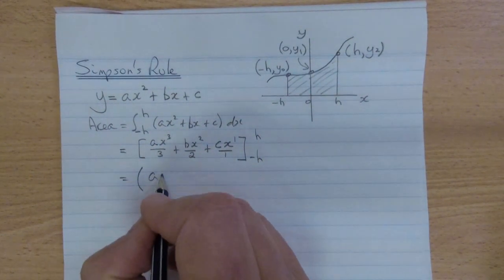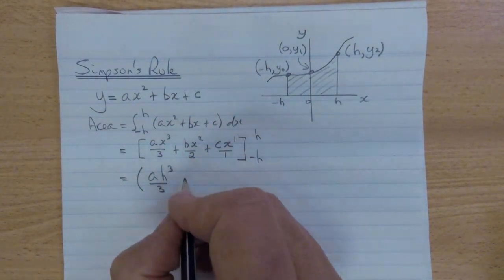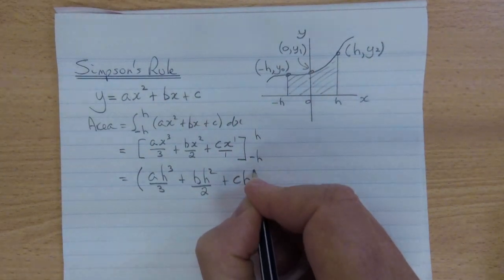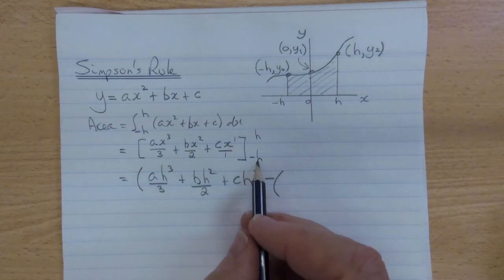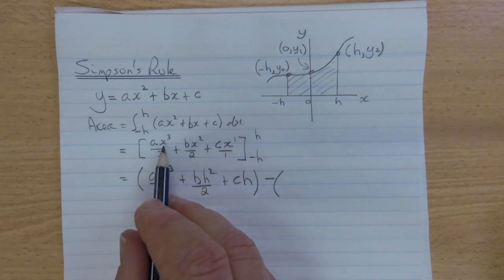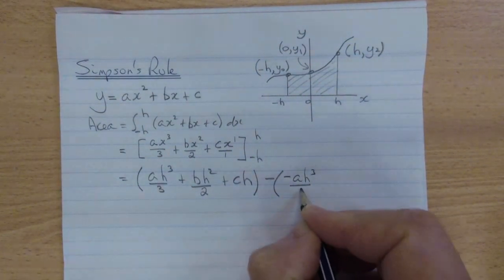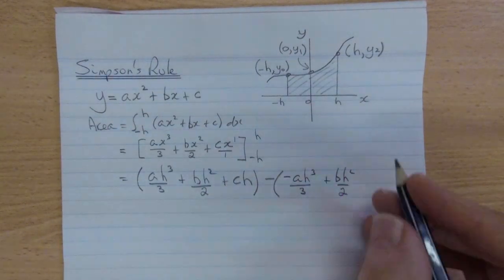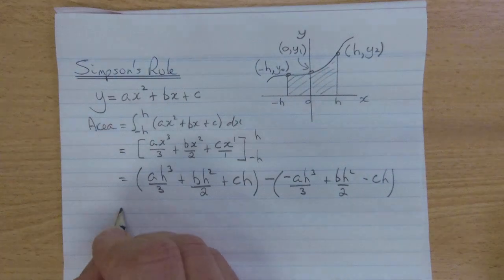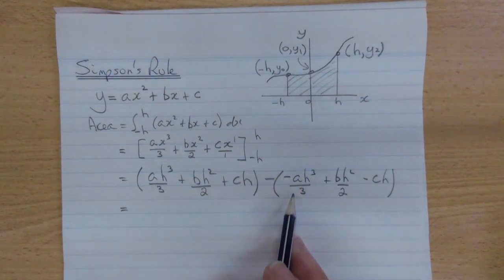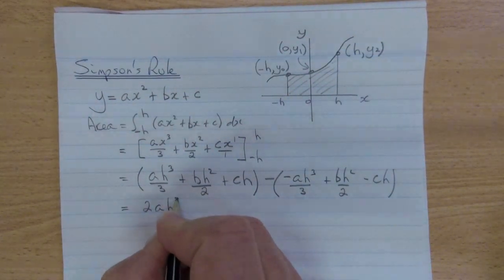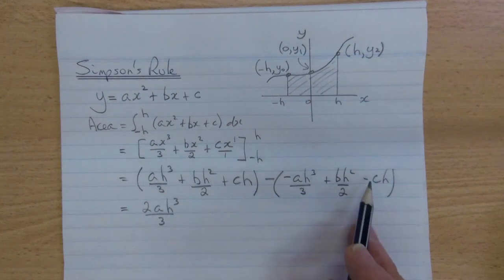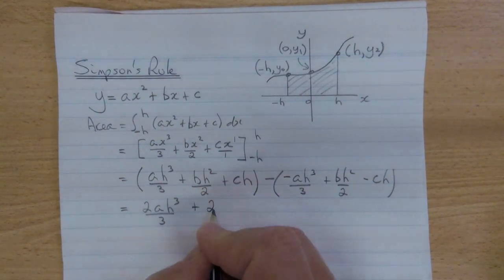Substitution will give a h cubed over 3, plus b h squared over 2, plus c h. Substituting negative h. Remember, a negative number cubed is a negative result. So this is negative a h cubed over 3. Squaring will become positive, plus b h squared over 2, and this is minus c h. Evaluating, subtracting a negative, this becomes a positive term. There's another one here. So it's 2 a h cubed over 3. Subtracting this term, which is identical, will disappear. Then, subtracting negative c h is like adding, so it's plus 2 c h.